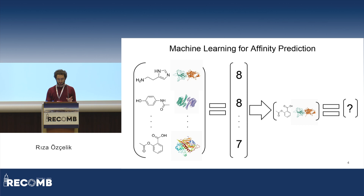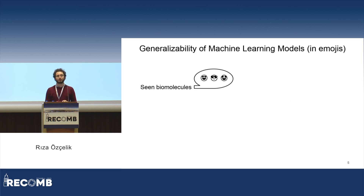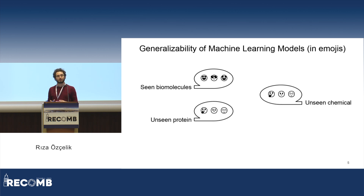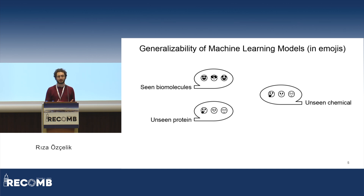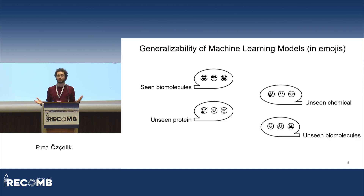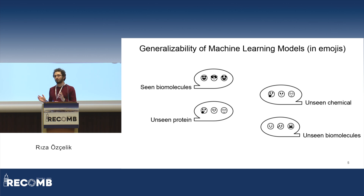We already have drug-target affinity prediction models, but there is a catch: their generalizability. If both the chemical and the protein are already available in your training set, your model will do just fine. But if either the chemical or the protein is unavailable in your training set, your model will start to struggle. And if neither the protein nor the chemical is in your training set, the prediction will become almost random. Current models are struggling to generalize to unseen chemicals, unseen proteins, or unseen combinations of both.